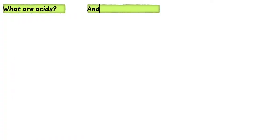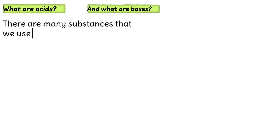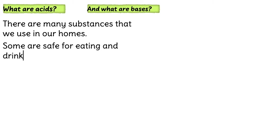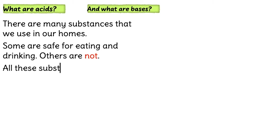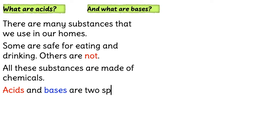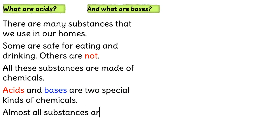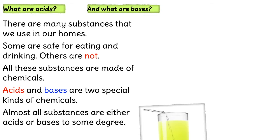What are acids? And what are bases? There are many substances that we use in our homes. Some are safe for eating and drinking, others are not. All these substances are made of chemicals. Acids and bases are two special kinds of chemicals. Almost all substances are either acids or bases to some degree.